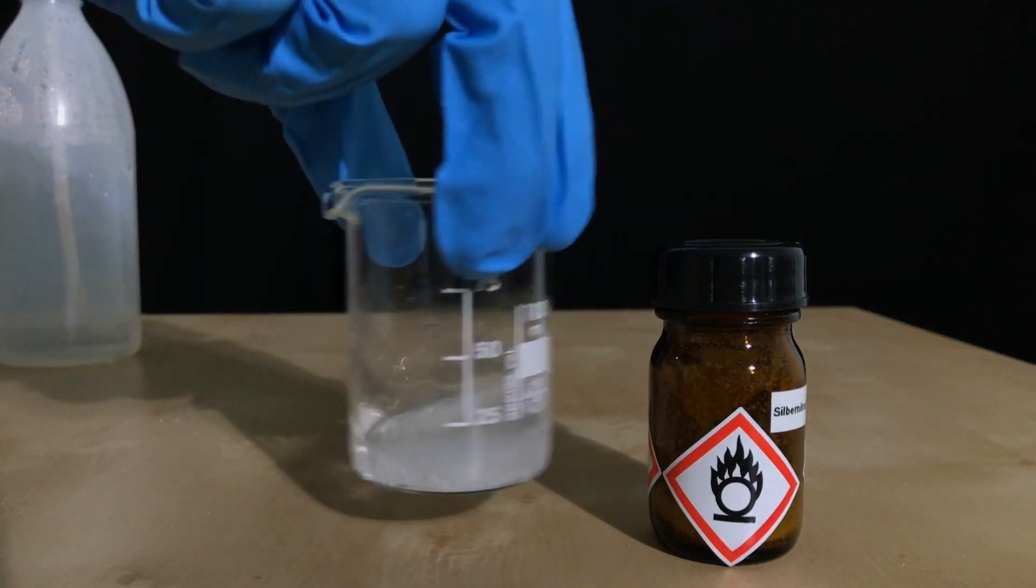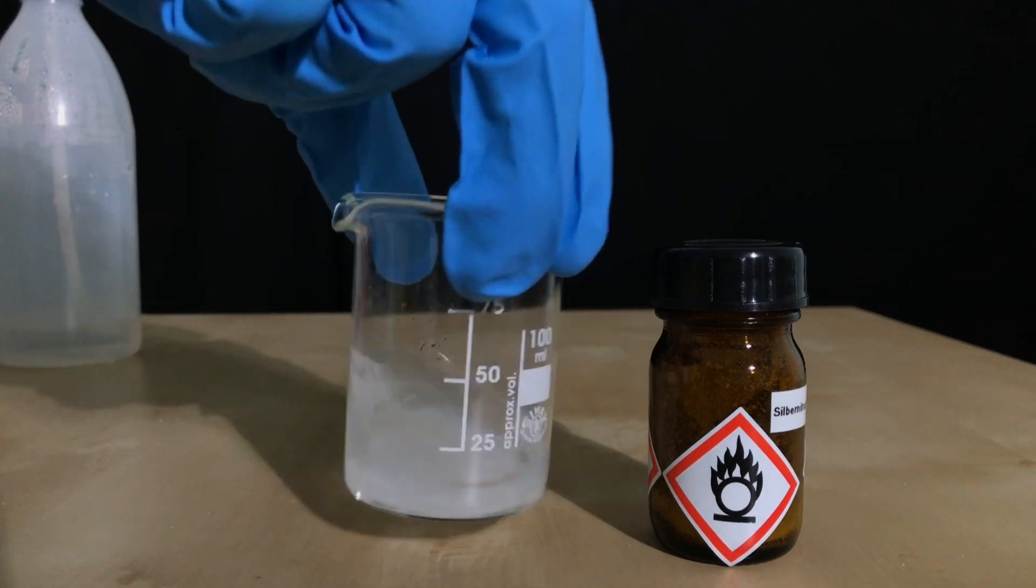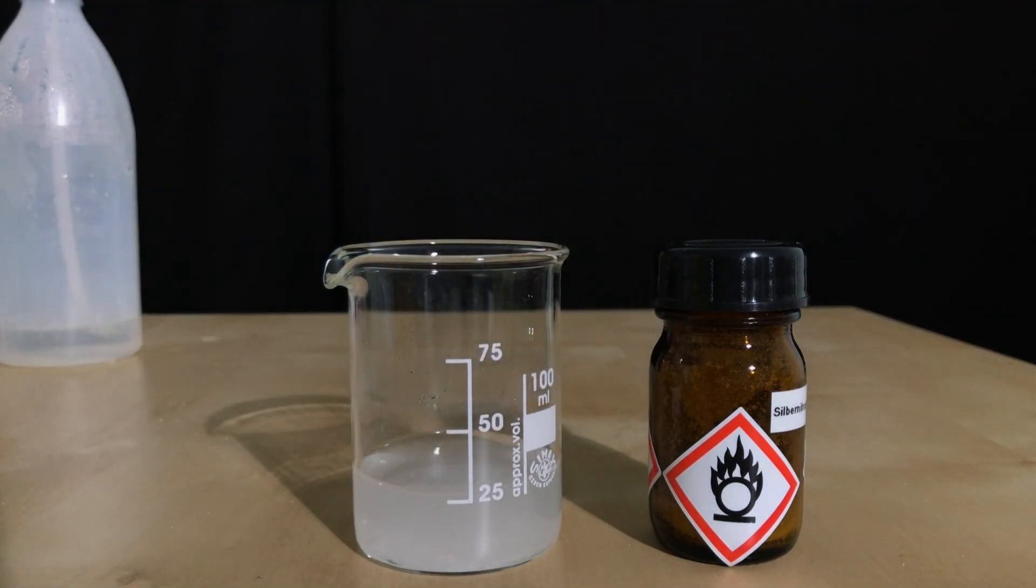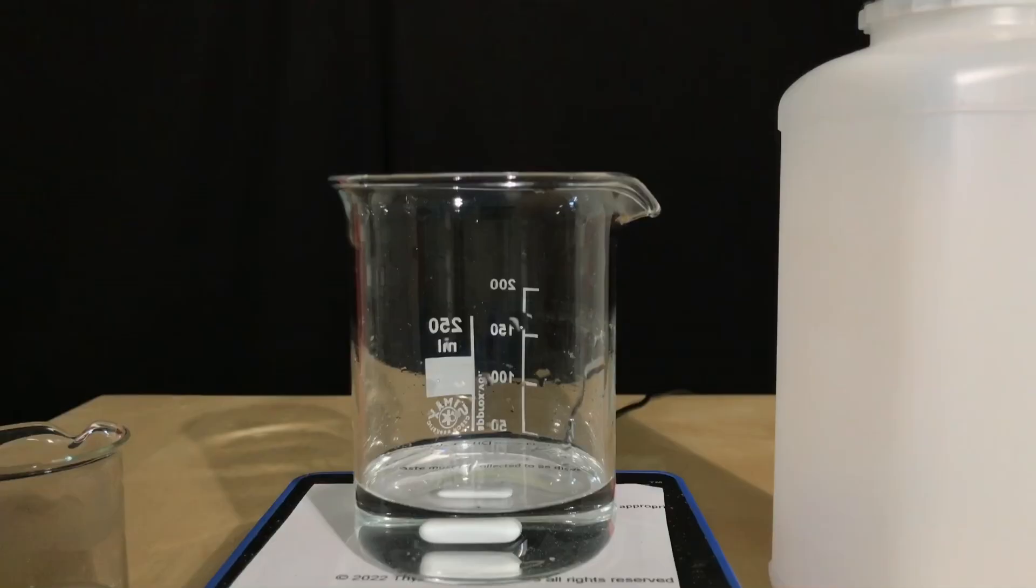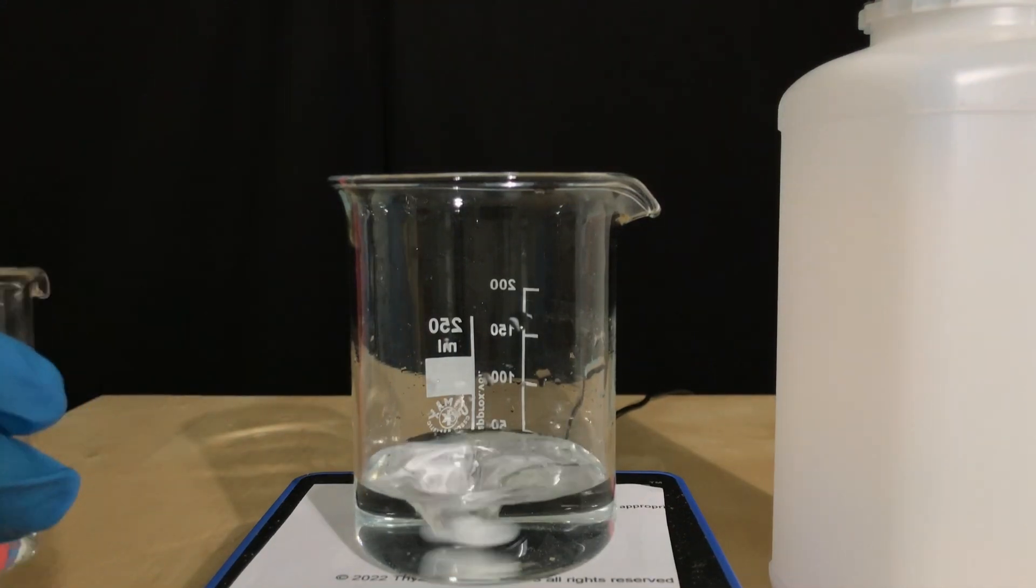Silver oxide is nearly insoluble in water anyways. Therefore, it doesn't matter if huge amounts of water are needed, because it won't have an impact on the yield. After turning on the magnetic stirrer, we are finally ready to start the reaction.